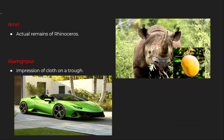Amri. 'Am' means mango. Actual remains of rhinoceros were found in Amri. So you can imagine this rhino who is fond of eating aam — mangoes. Amri: rhinoceros remains.